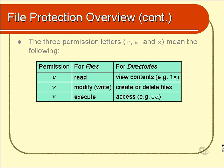Finally, the X permission means that you can execute the file. That only makes sense if the file is a program — either a binary program or a shell script. It's possible to set the X permission for any other type of file, such as a text document, but it makes absolutely no sense and doesn't give you any benefit. Unix may attempt to run the file but will quickly realize it is not a program and not execute it at all.